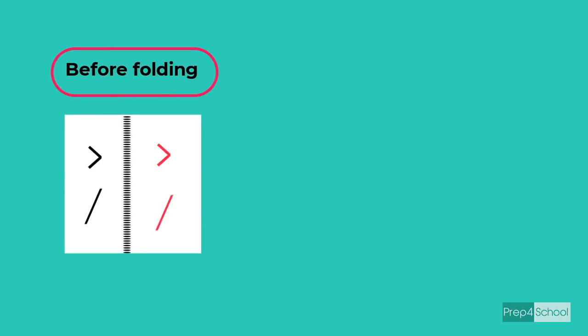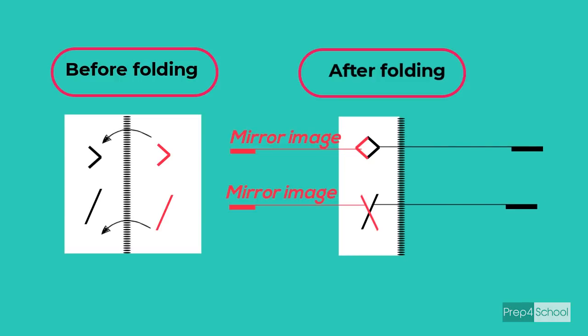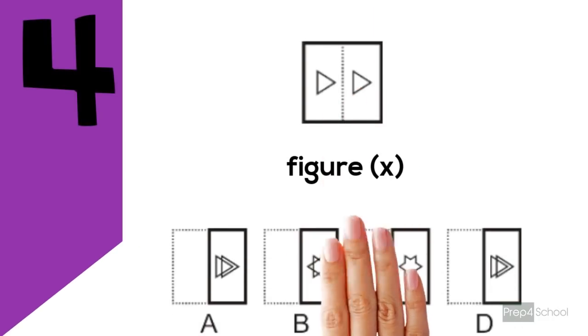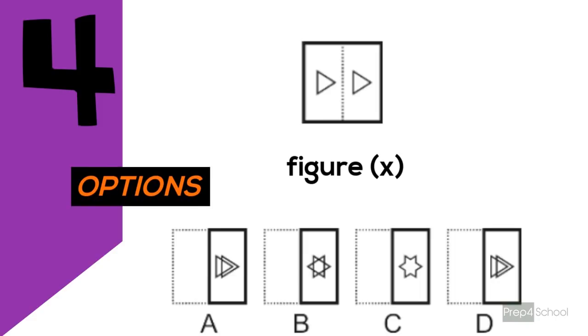From those three examples, can you get the idea of how to find the folded image? When you fold a paper into exact half, a new image will be formed as the mirror image combined with the already existing image. Let's take more examples to understand this concept better.